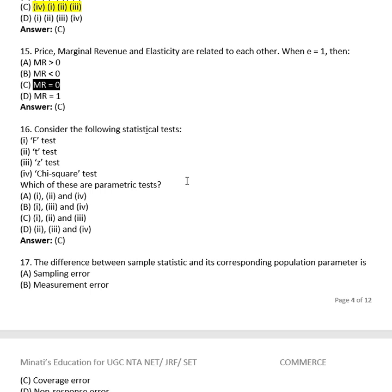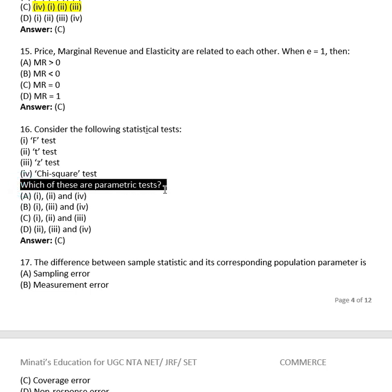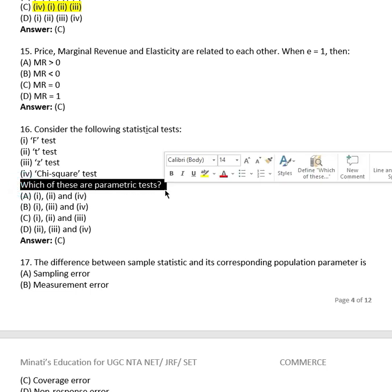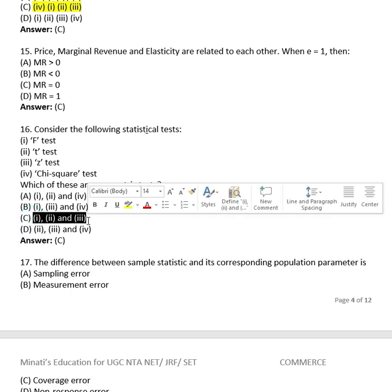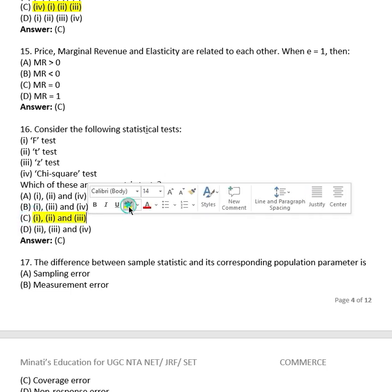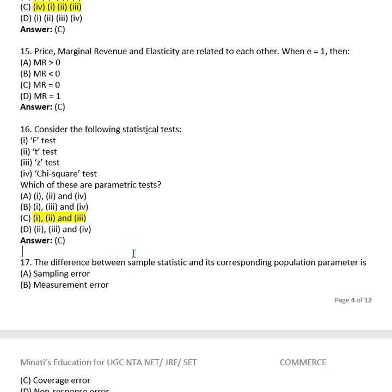Question 15: Consider the following statistical tests — F test, t test, Z test, Chi-square test. Which of these are parametric tests? The right answer is (1), (2), and (3) — that is F test, t test, and Z test.